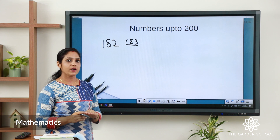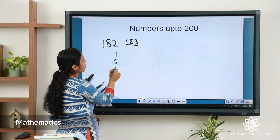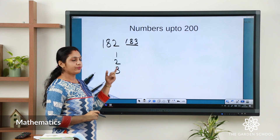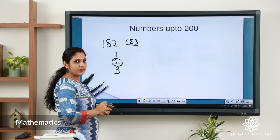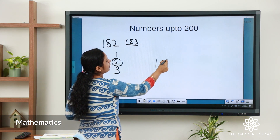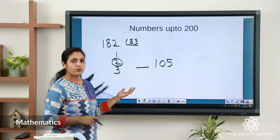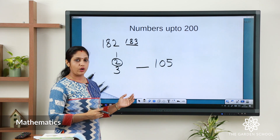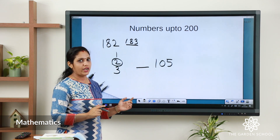Now we will find the number which comes before. Before means just go back one step. The number before 3 — count 1, 2, 3 — so the number before 3 is 2. Similarly in three-digit numbers: the number before 105 — count 100, 101, 102, 103, 104, 105 — the answer is 104.